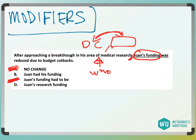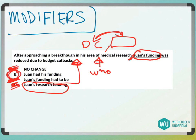Looking at D — 'Juan's research funding' — did Juan's research funding approach a breakthrough? Nope. We need answer choice B, which makes it a little wordier, but we need to say who Juan is and what happened to Juan. Juan had his funding reduced due to budget cutbacks, so answer choice B is correct.